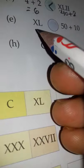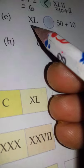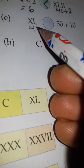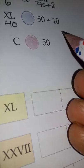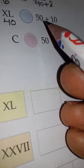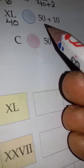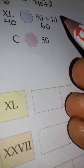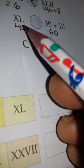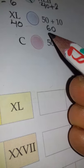Part (e): XL - this is the symbol for 40. On the other side it's given as 50 plus 10. What will you get if you add 50 plus 10? 60. So this side is 40, this side is 60, so which one is greater? Very good, 50 plus 10.